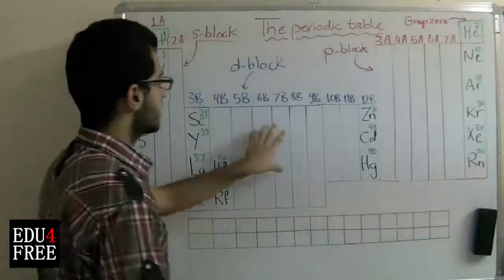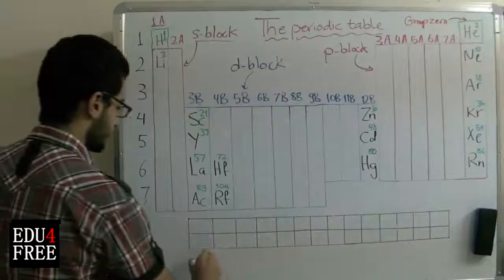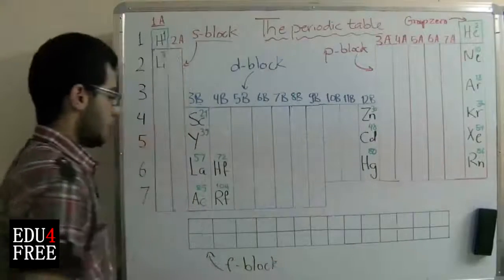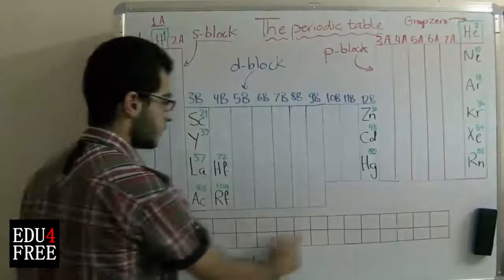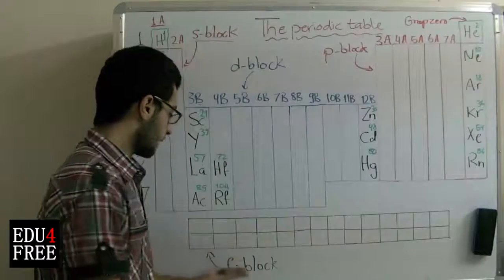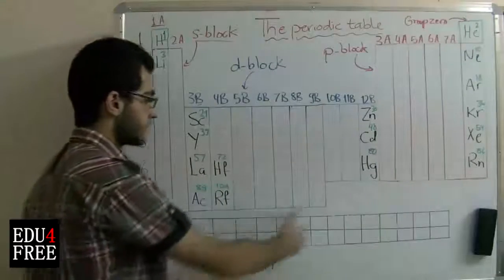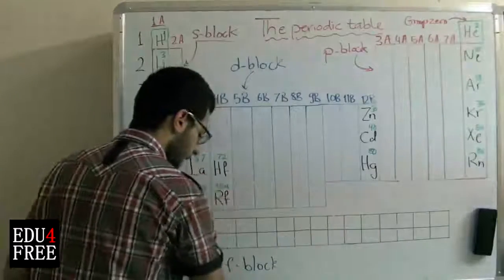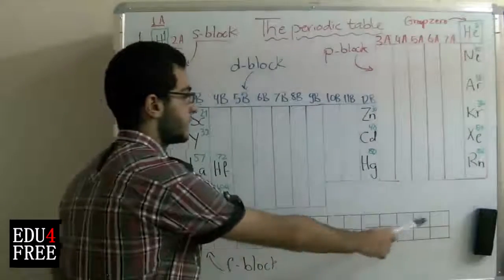This is the D block. And finally, we have the F block. If we count the number of groups found here, we'll find that there are 14, because the F block contains elements in which the F energy sublevel is filled gradually from beginning to end. As the F sublevel is capable of carrying 14 electrons at most, there are 14 groups.